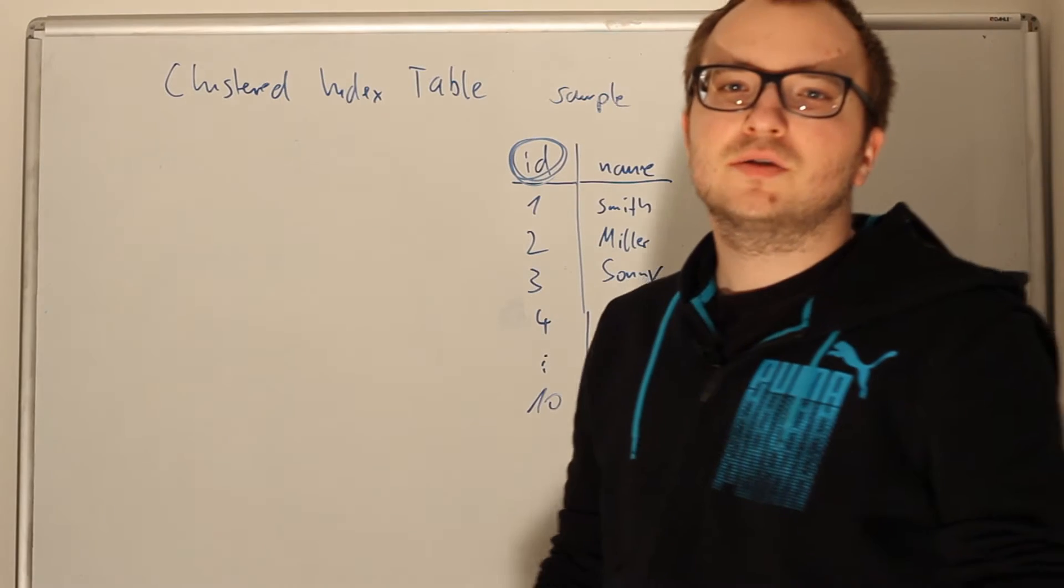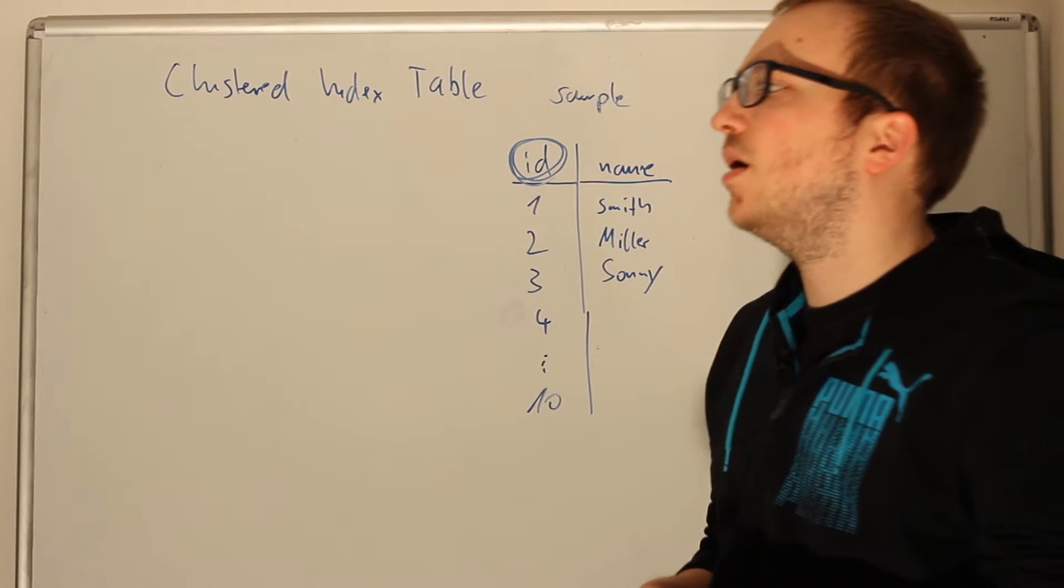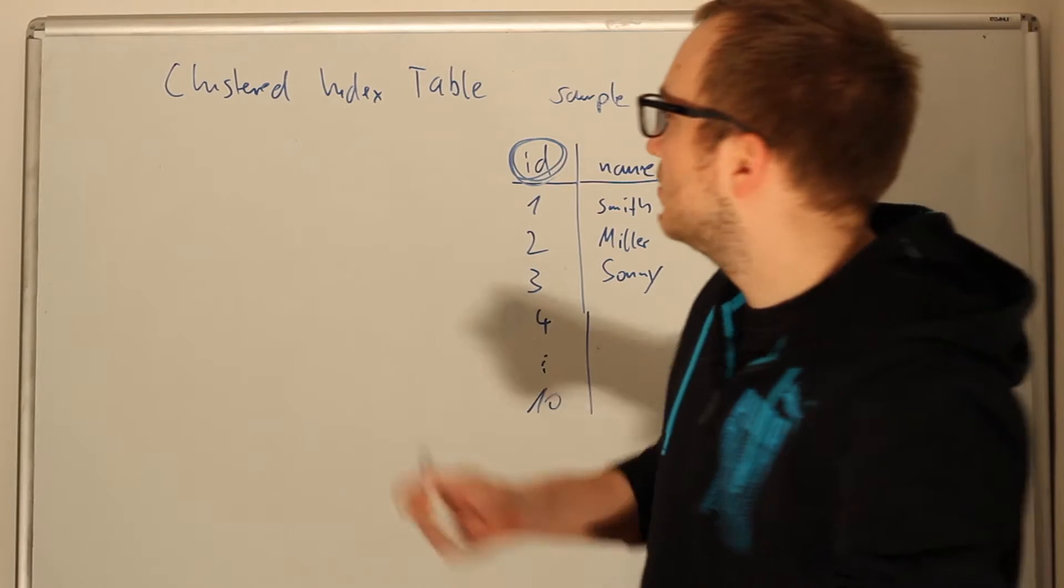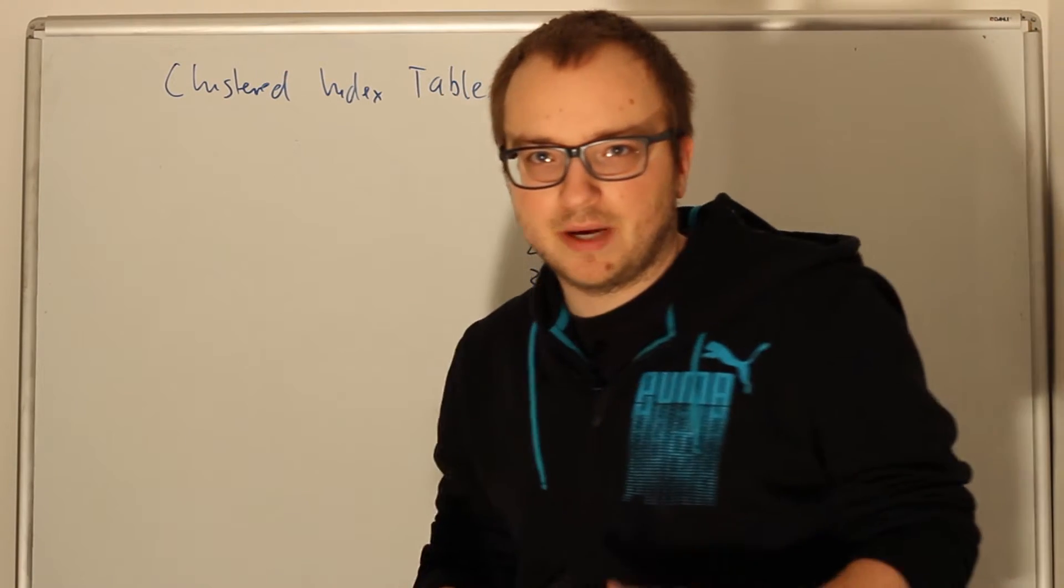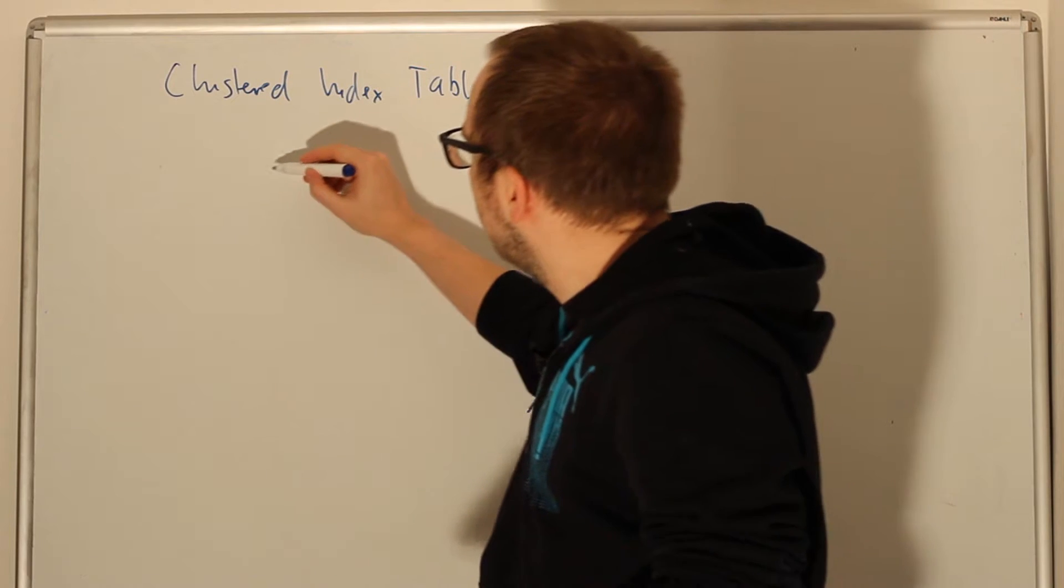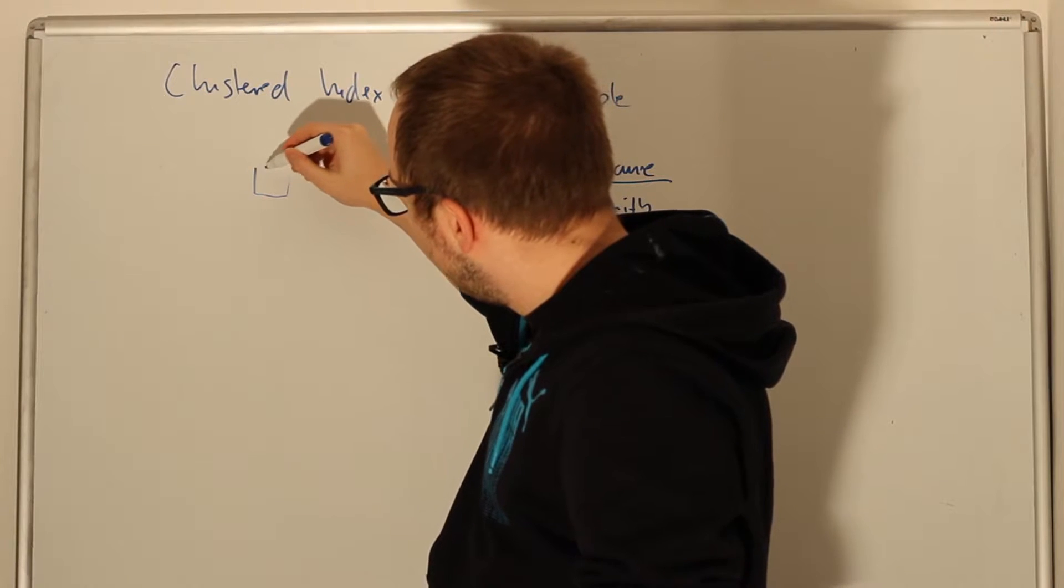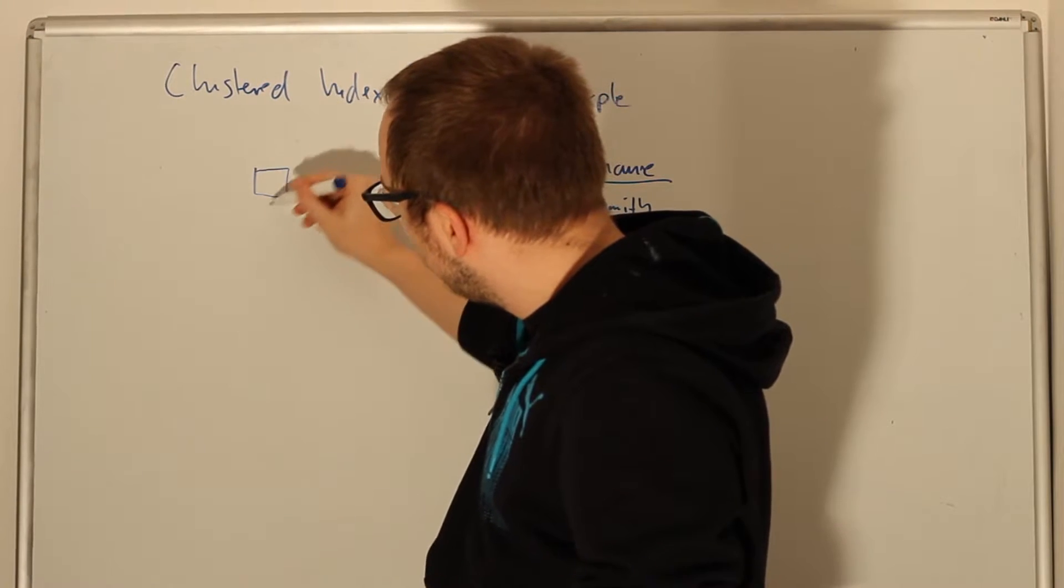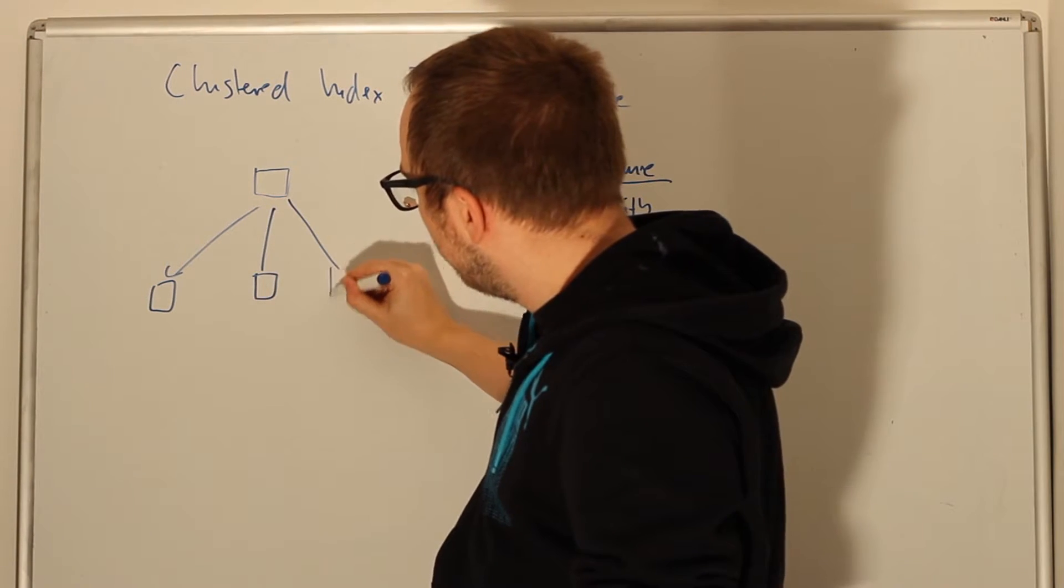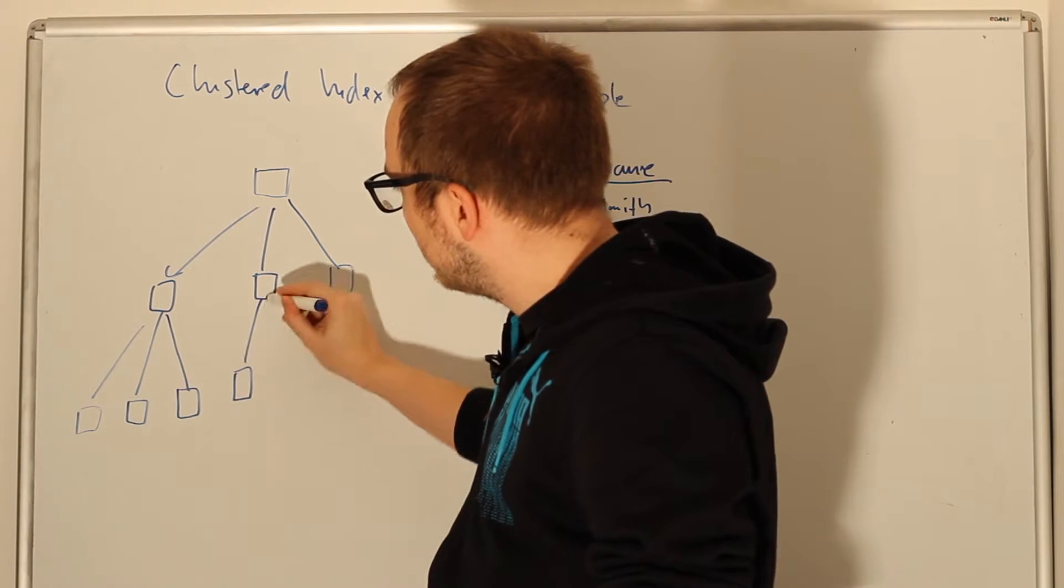This is basically how a clustered table is stored in SQL Server. With a basic understanding of B-trees, we can dig a little deeper into how SQL Server stores data. SQL Server stores data in the exact same way. For SQL Server we always have data pages—we'll talk about data pages in another video in detail. For now, imagine them as nodes. We have a root node here that has intermediate nodes.